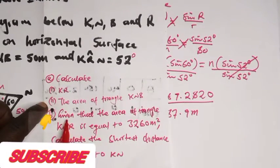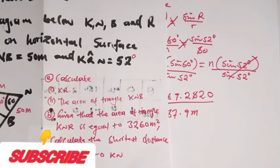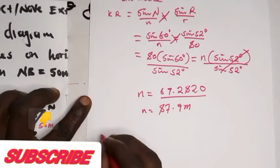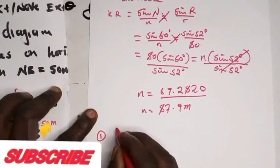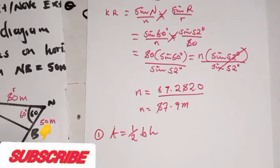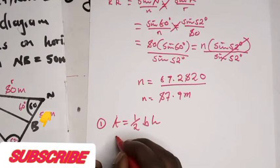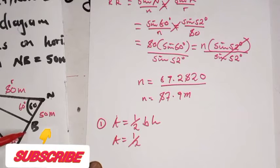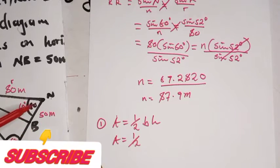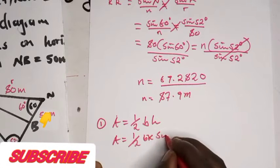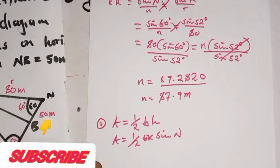For part two, we are asked to find the area of triangle KNB. For the area of a triangle in trigonometry, we use: area equals half times b times k times sine N. Since sine N is 60 degrees, we set up the formula accordingly with the included angle.